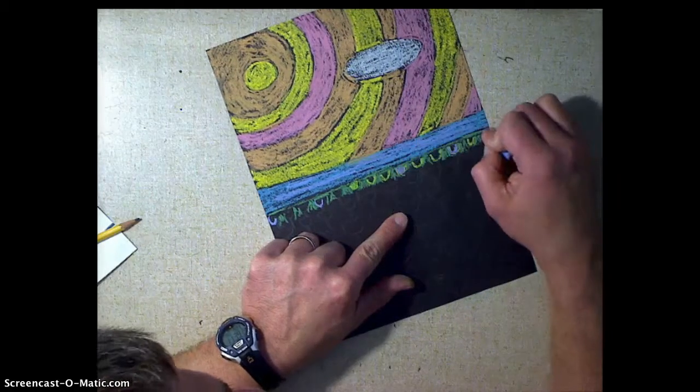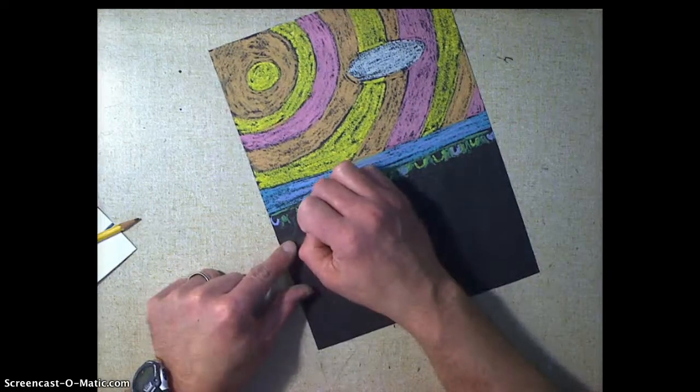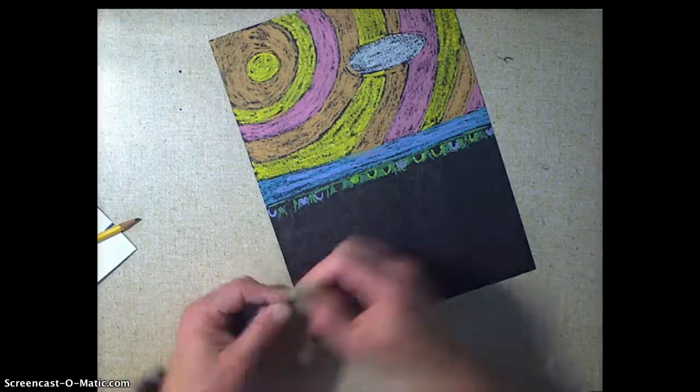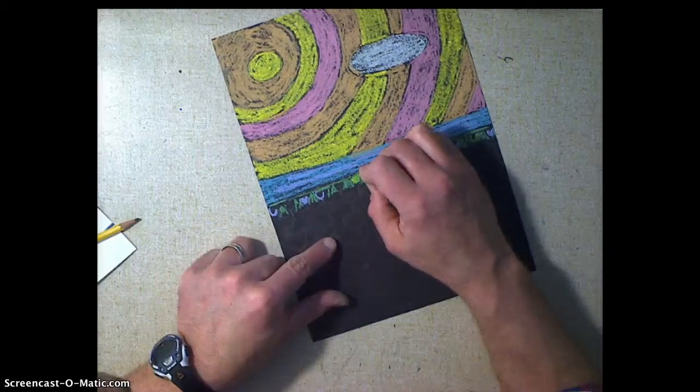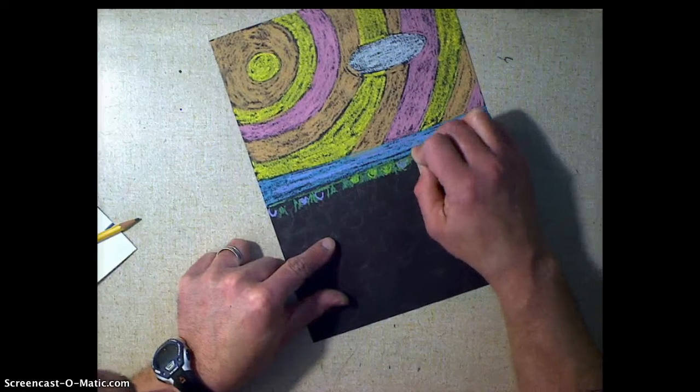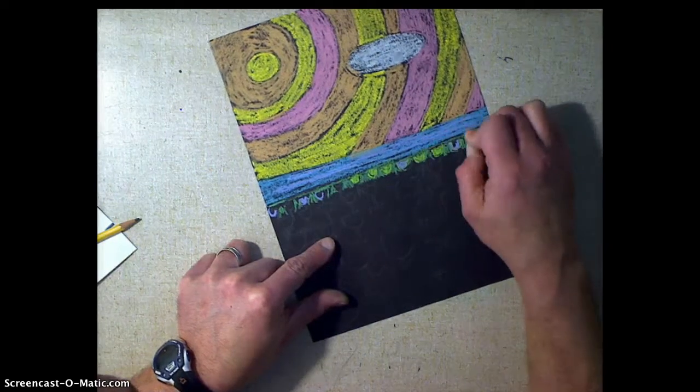And these off in the distance, you won't be able to tell as much what they are. But when you get closer up here to the bottom, you'll be able to see real easily that these are tulips. So don't worry if these back here aren't as perfect as you want them to be. Really concentrate on the front.